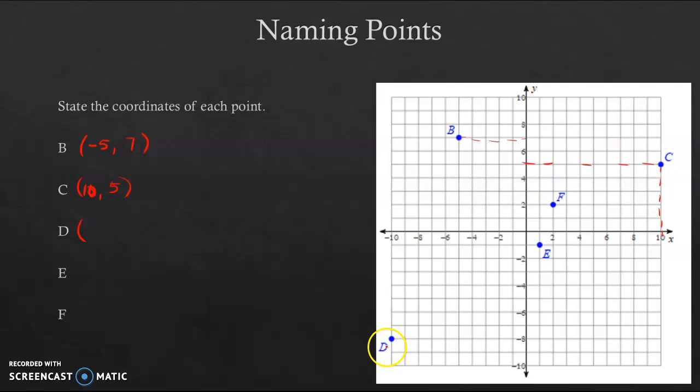D is located over here. If I'm going to go up to the x-axis first, we're located at -10. And then I'm going to go over to the y-axis and see where I'm located there, which in this case is -8. And so D is located at (-10, -8).